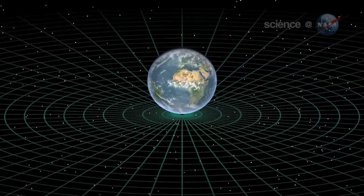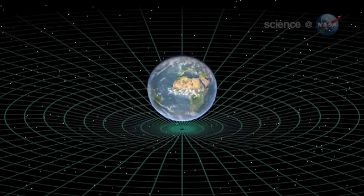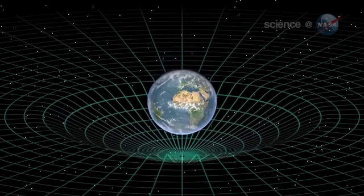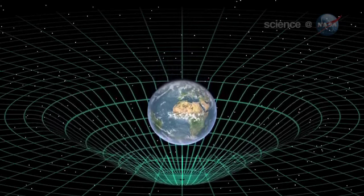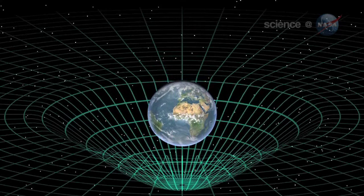Time and space, according to Einstein's theories of relativity, are woven together forming a four-dimensional fabric called spacetime. The mass of Earth dimples this fabric, much like a person sitting in the middle of a trampoline.